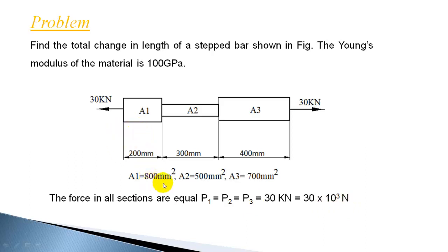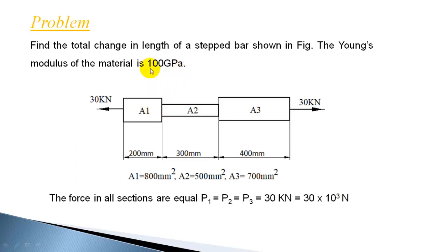In this example, the area is given directly. Instead of giving the dimensions of the cross section, the area is given directly: A1 = 800 mm², A2 = 500 mm², A3 = 700 mm². If the dimensions were given, you would calculate the area, but since the area is given directly, our problem is simplified. The Young's modulus of the material is common for all sections and is given as 100 GPa. We need to calculate the change in length of each individual section and add all three to get the total elongation.